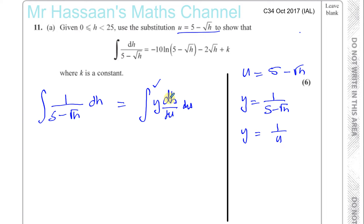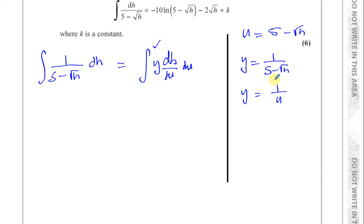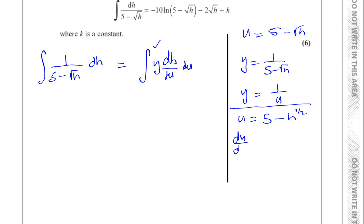I need to find dh/du. We know u equals 5 minus the square root of h, which I'll write as 5 minus h to the power of a half, ready for differentiation. I'll first find du/dh — that's the reciprocal of what I need. Differentiating: the 5 disappears and we get minus a half times h to the power of minus a half.